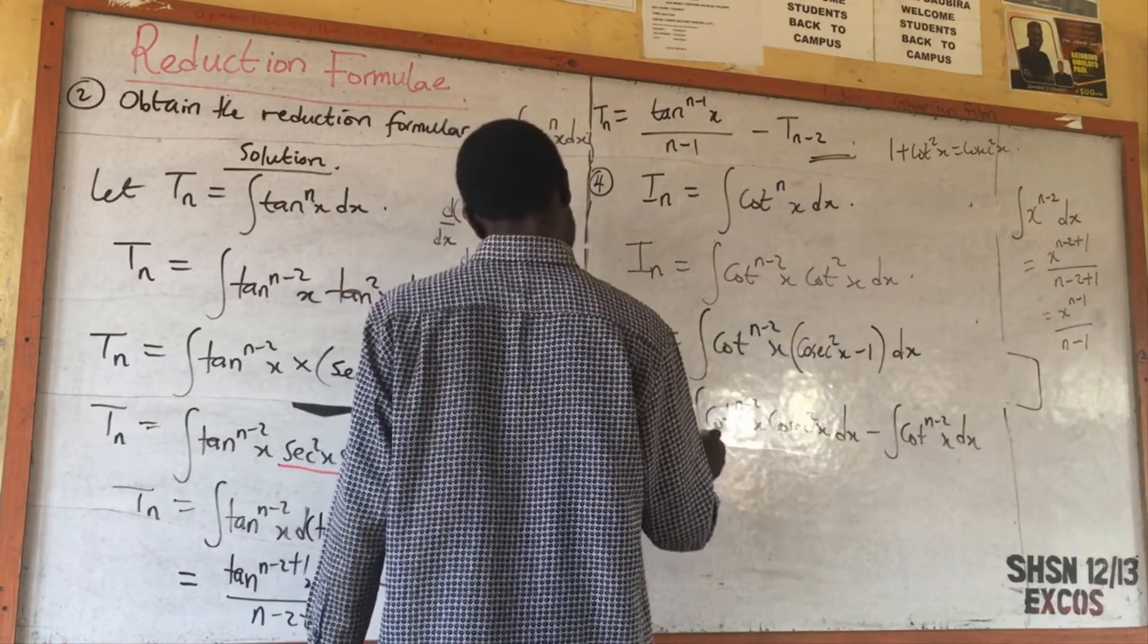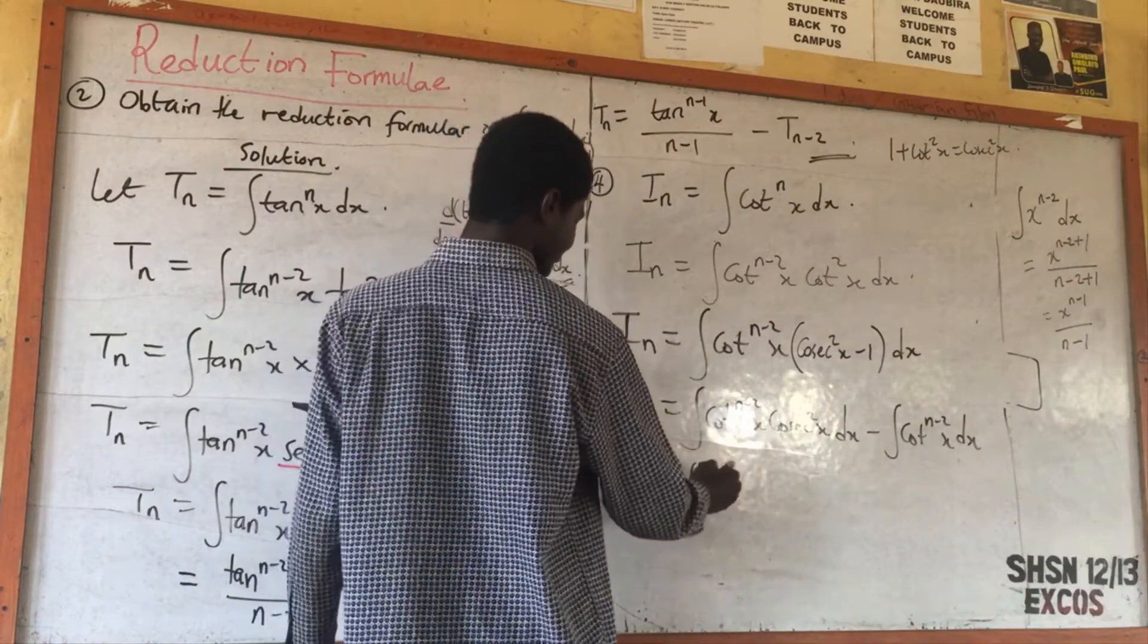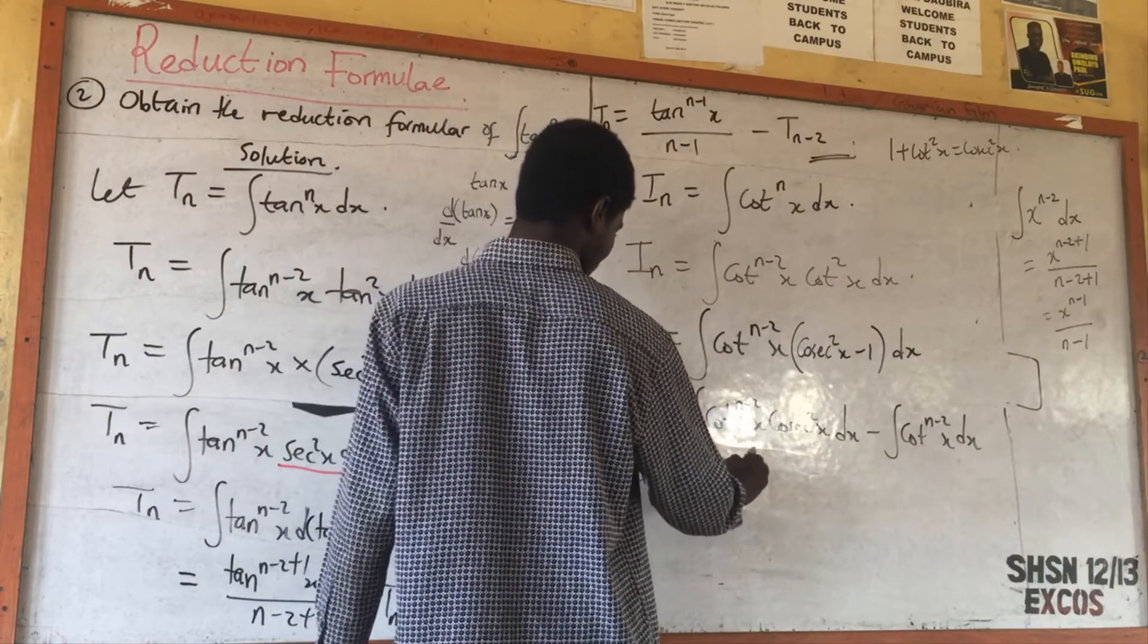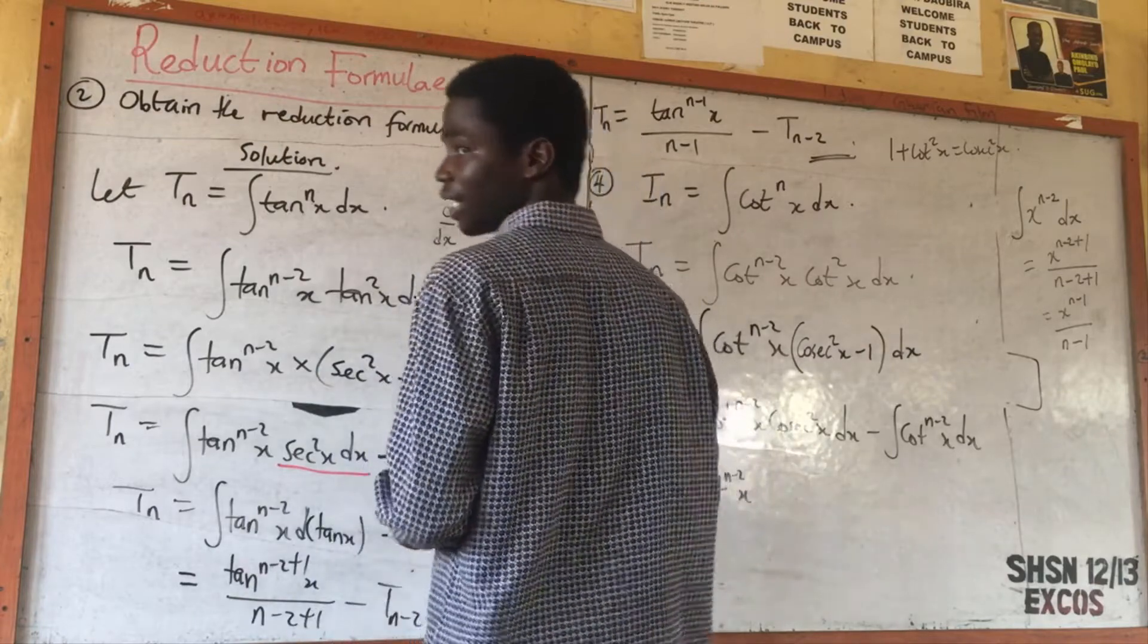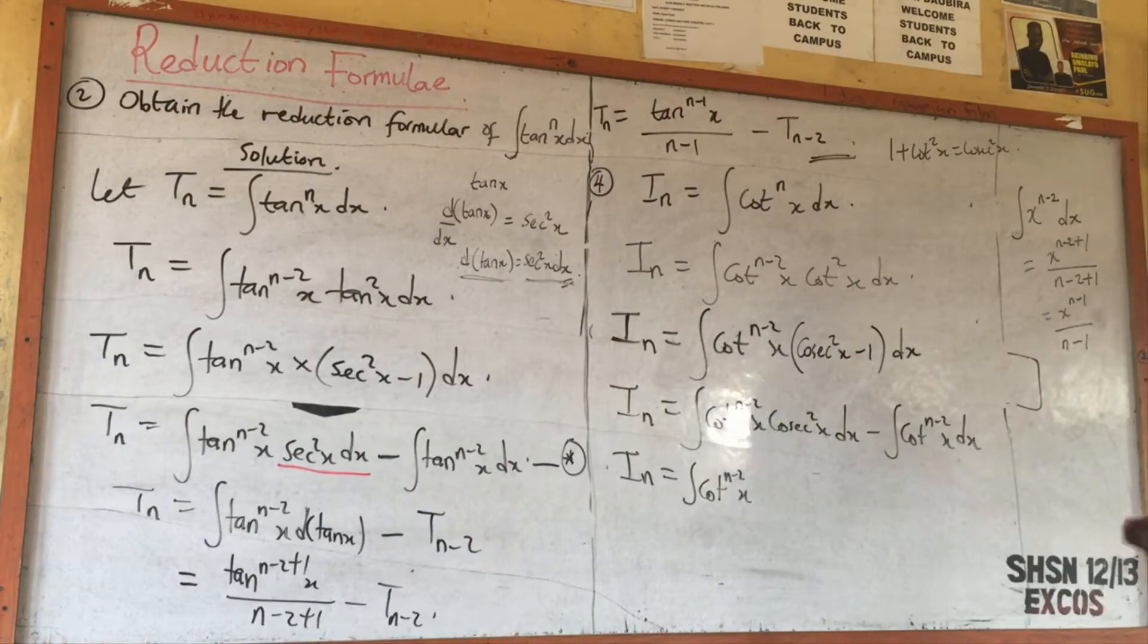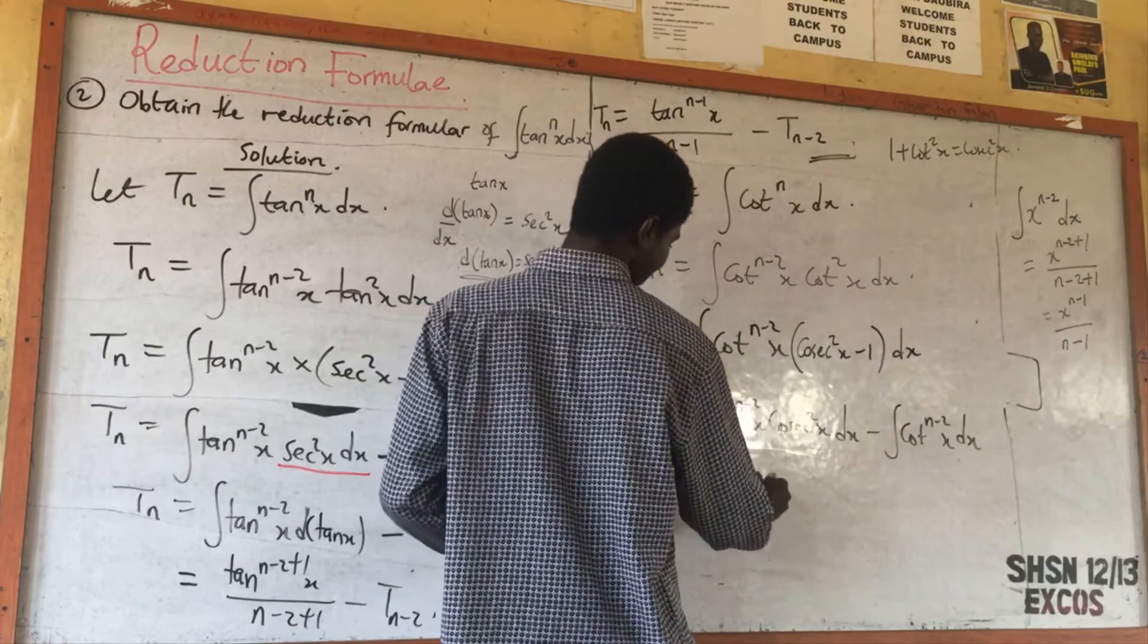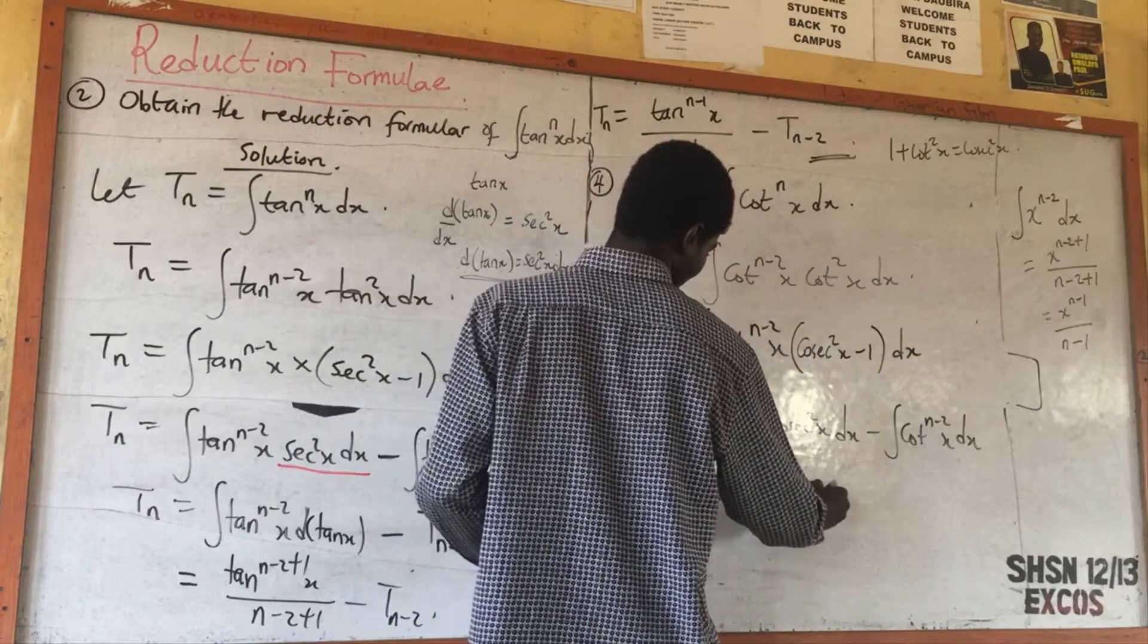That I_n will now be equal to this one, again, like what I have done in the other one. If you differentiate cot x, you have minus csc²s. Since I have csc²s here, I will just write minus cot^(n-1)s.